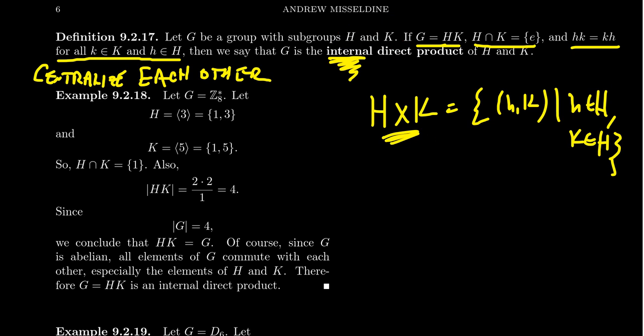Let's look at some examples. Take G to be Z8*, the multiplicative group mod 8. Consider subgroup H as the cyclic subgroup generated by 3. Since 3×3=9≡1 mod 8, the cyclic subgroup generated by 3 is cyclic of order 2: {1, 3}. Similarly, take K as the cyclic subgroup generated by 5. Since 5×5=25≡1 mod 8, 5 also has order 2 mod 8.